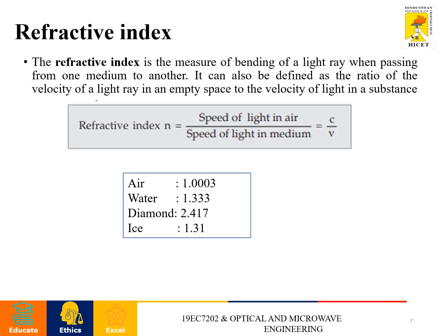Next, refractive index. The refractive index is the measure of bending of light ray when passing from one medium to another medium. It can also be defined as the ratio of the velocity of light ray in empty space to the velocity of light in the substance. In general, we can define refractive index N equals speed of light in air to the speed of light in medium, C by V.